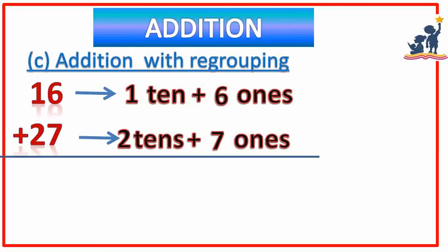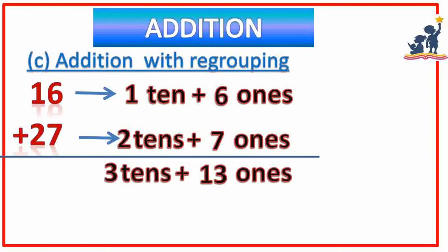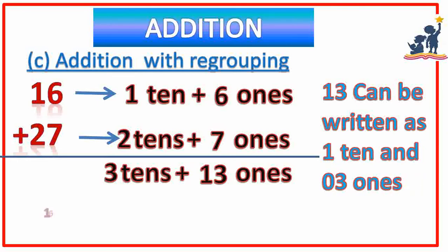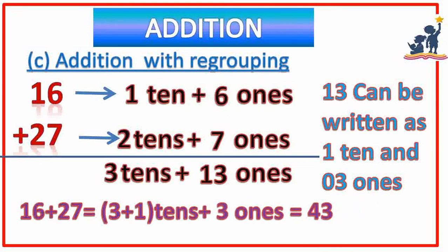C: addition with regrouping. Here, 16 plus 27. 16 can be written as 1 ten plus 6 ones, and 27 can be written as 2 tens plus 7 ones. So the total of 1 plus 2 tens is 3 tens, and the total of 6 plus 7 ones is 13 ones. So 13 can be written as 1 ten and 3 ones. The solution becomes 16 plus 27 is equal to 3 plus 1 tens, that is 4 tens plus 3 ones, is equal to 43.